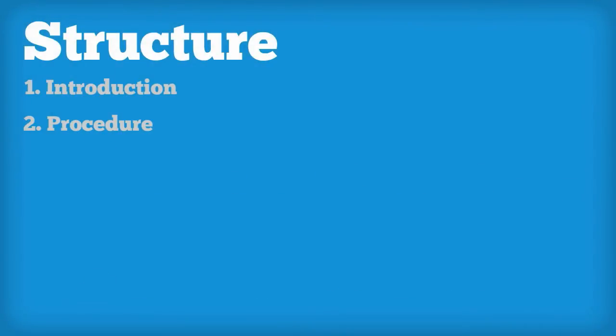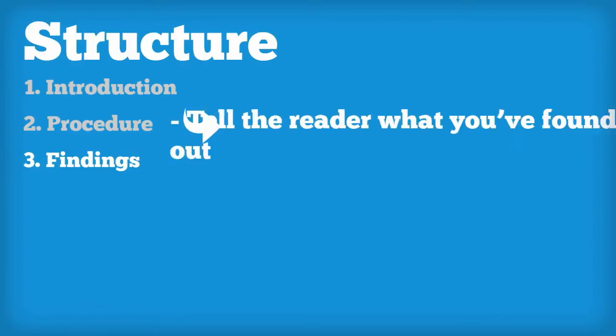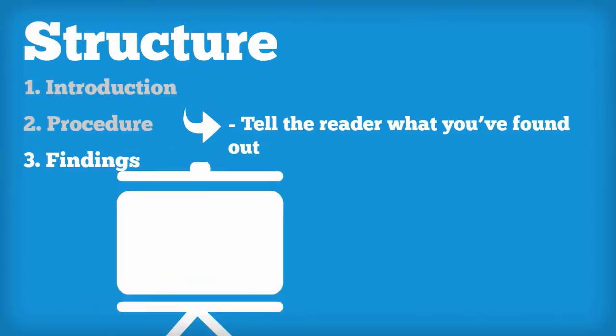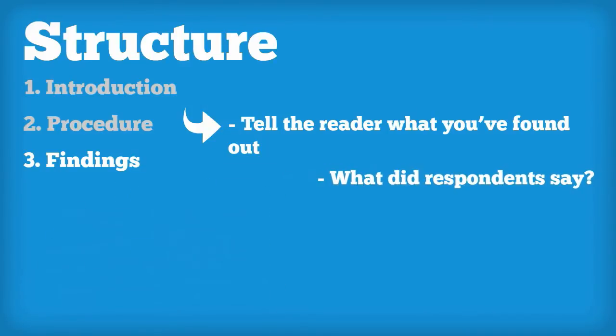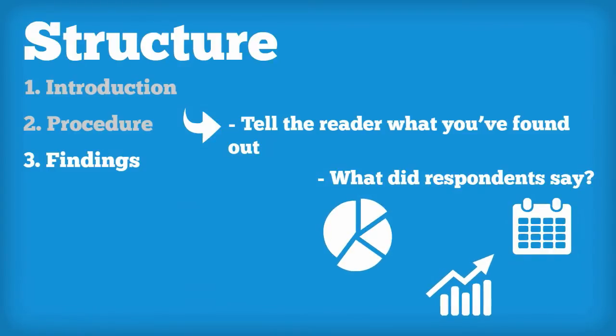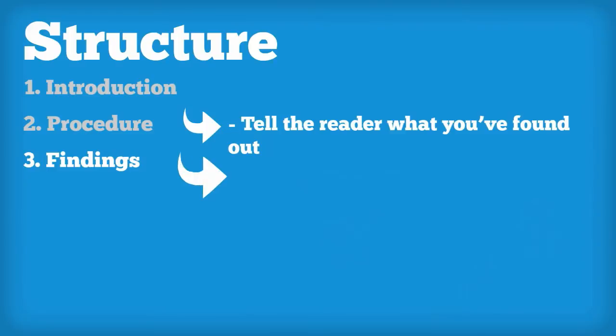Once we have gathered our data, we will include it in our findings. This is the part of our report where we will tell the reader exactly what we have found out. What did our respondents say? Reports often use lots of tables and graphs to display information quickly and clearly. A findings section is where the main problems identified from the data are laid out.